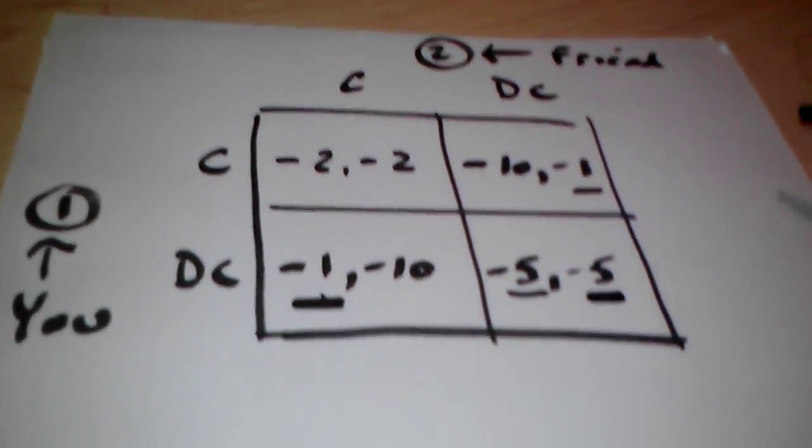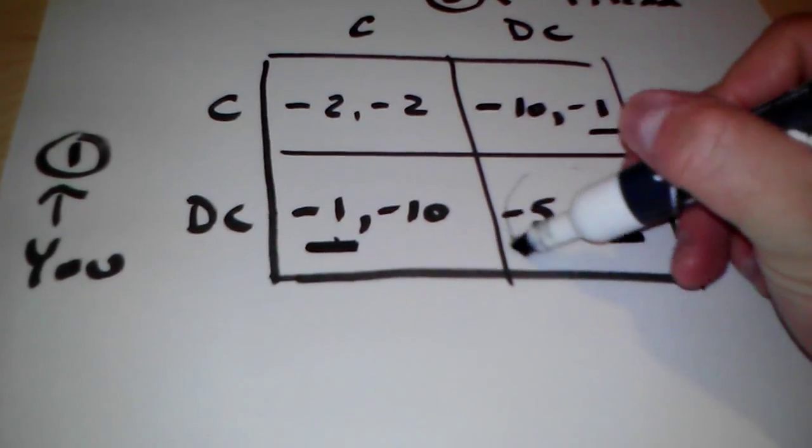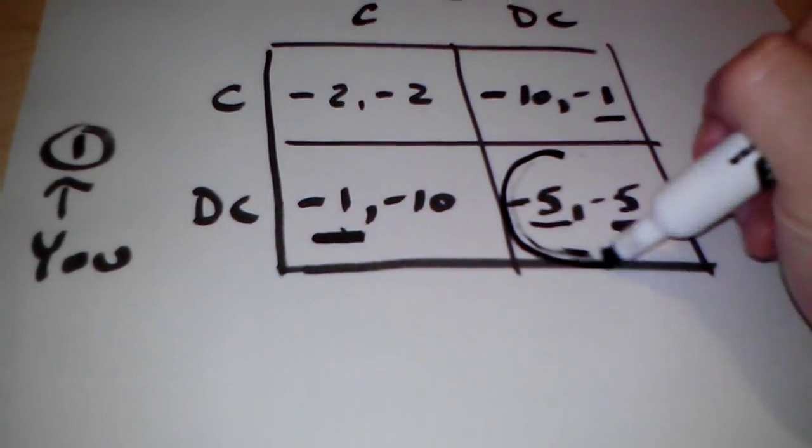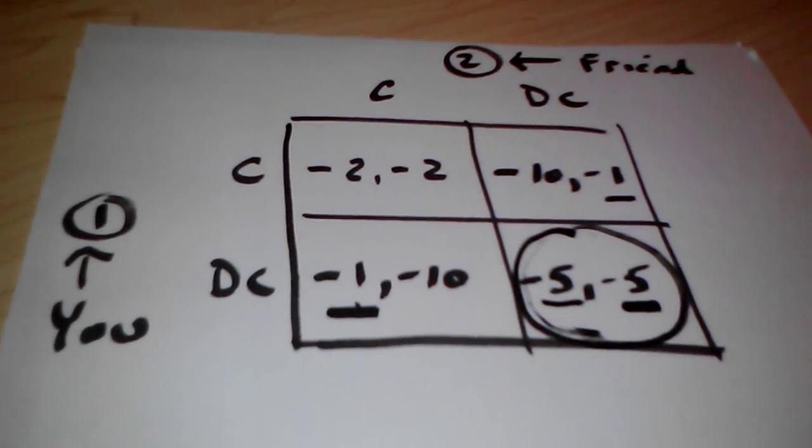When you do all four of those steps, you'll have four underlines. And if you have a box where both numbers are underlined, in this case we have negative five, negative five, then you've reached an equilibrium.